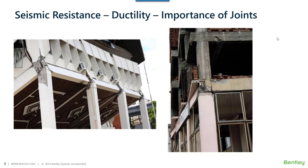In the second photograph, we see a joint failure between the top of the lower column and the bottom of the upper column — the joint has failed. If we look at it closely, the structure itself is not damaged, but the joint has failed, which is very crucial and not acceptable.